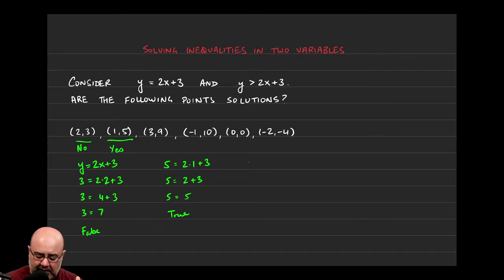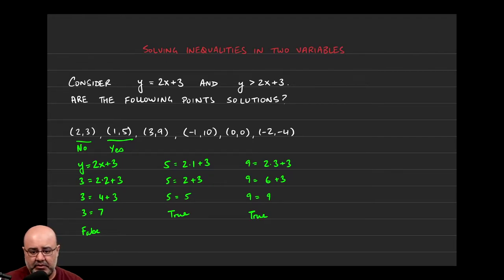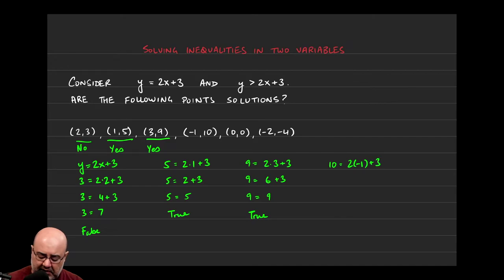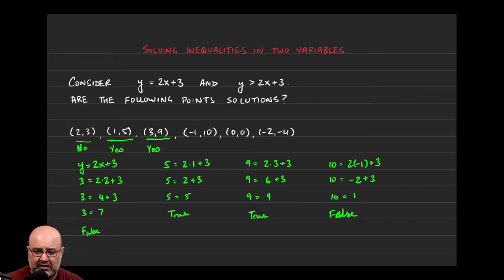So (1, 5) is a solution to y equals 2x plus 3. Let's try the third point, (3, 9): 9 equals 2 times 3 plus 3, which gives 9 equals 6 plus 3, which is 9. And 9 does indeed equal 9 — that is also a true statement, so (3, 9) is also a solution. Then for (-1, 10): 10 equals 2 times negative 1 plus 3, so 10 equals negative 2 plus 3, which is just 1. That's false, so (-1, 10) is not a solution to that equation.